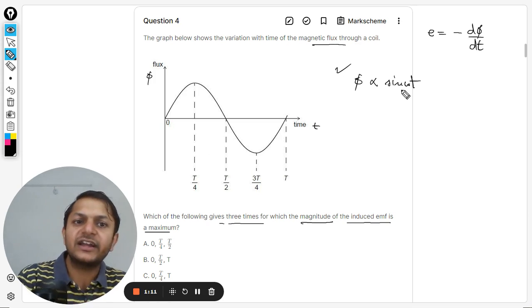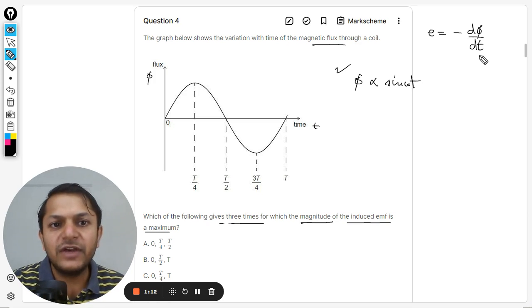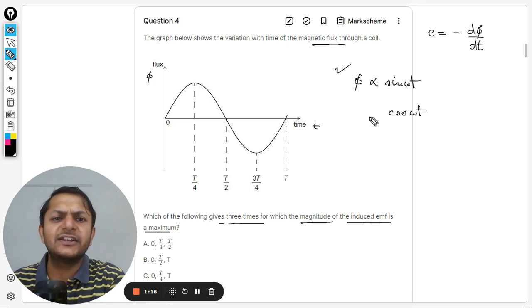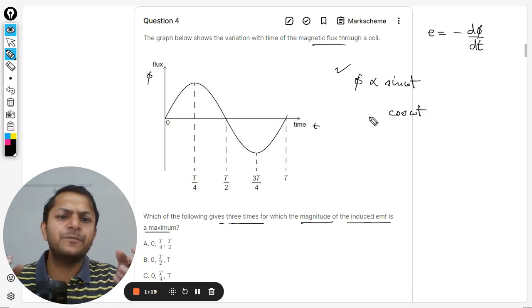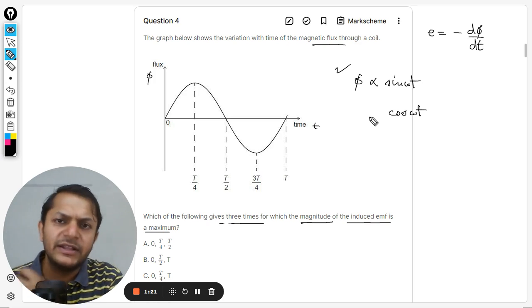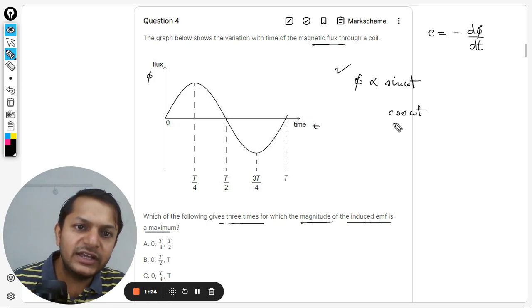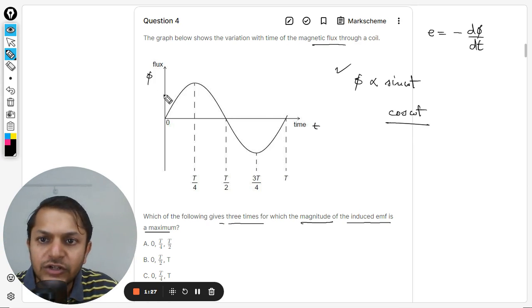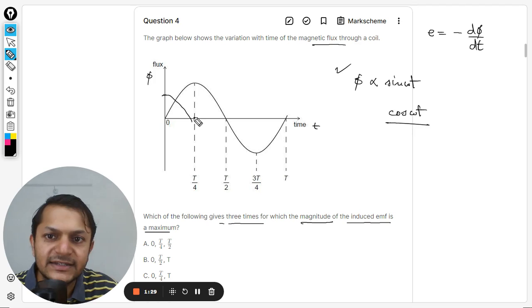So phi is directly pointing to sine, and we know that when we differentiate it we actually get cosine. Definitely there is a negative sign there and there will be omega multiply in the amplitude, we don't care about those things. The only thing is that there will be a cosine variation, so cosine variation will somewhat look like this.